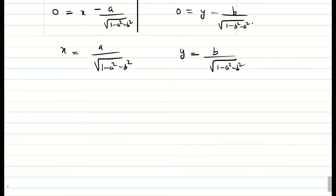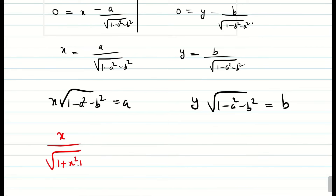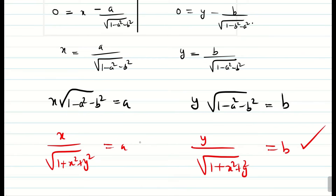Next, we need to find a and b. Using the expressions for x and y: x into square root of 1 minus a square minus b square equals a, and y into square root of 1 minus a square minus b square equals b. Substituting the value we found: x divided by square root of 1 plus x square plus y square equals a, and y divided by square root of 1 plus x square plus y square equals b.